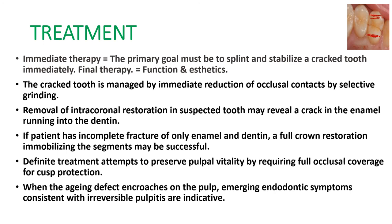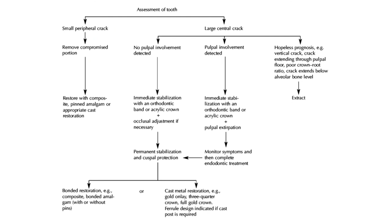If the patient has an incomplete fracture of only enamel and dentine, a full crown restoration can immobilize the segment as a successful treatment. Definitive treatment attempts to preserve pulpal vitality by requiring full occlusal coverage for cusp protection. When the defect encroaches on the pulp with symptoms consistent with irreversible pulpitis, the treatment plan leads to root canal treatment.